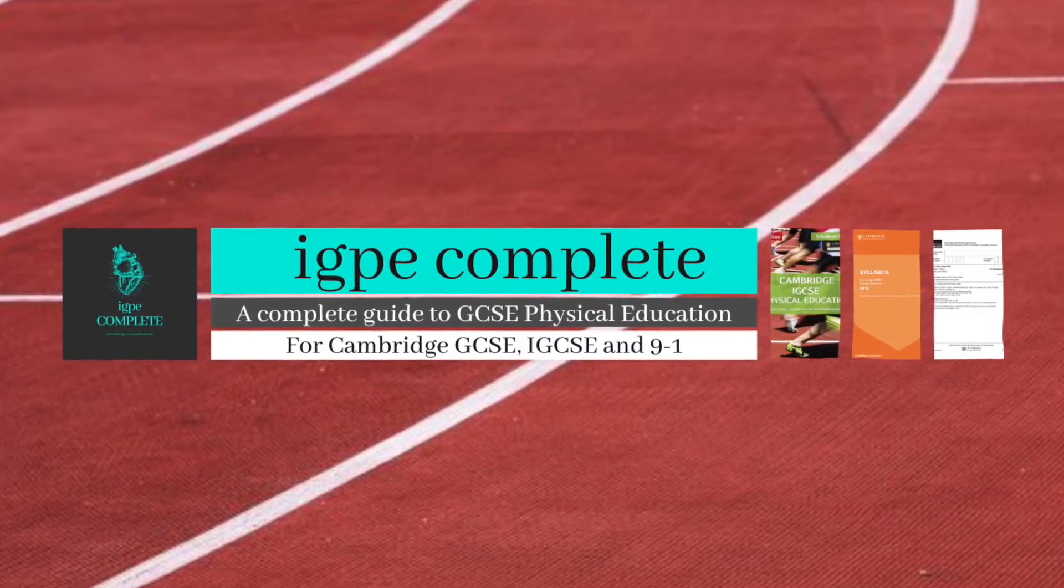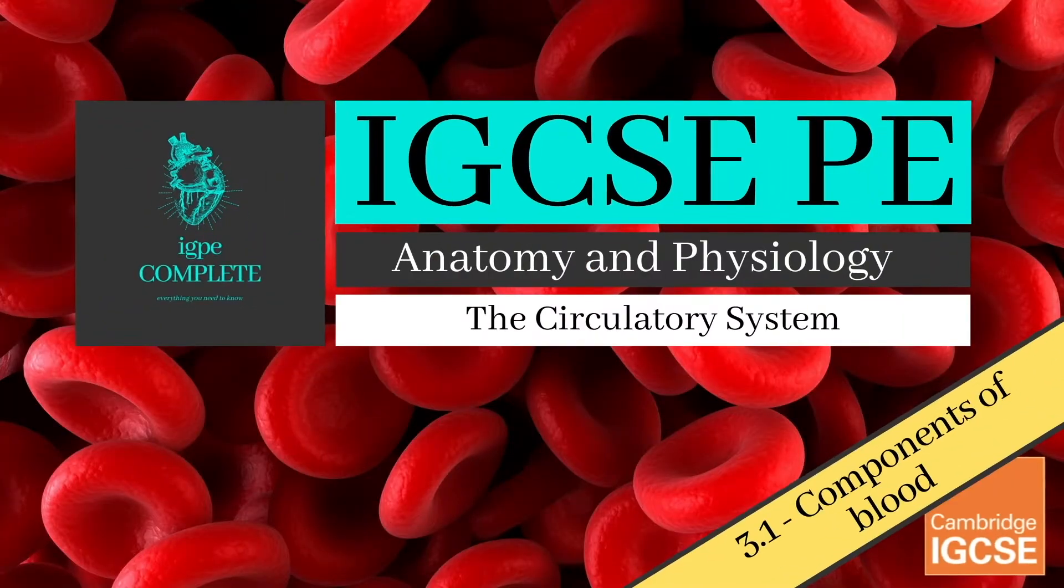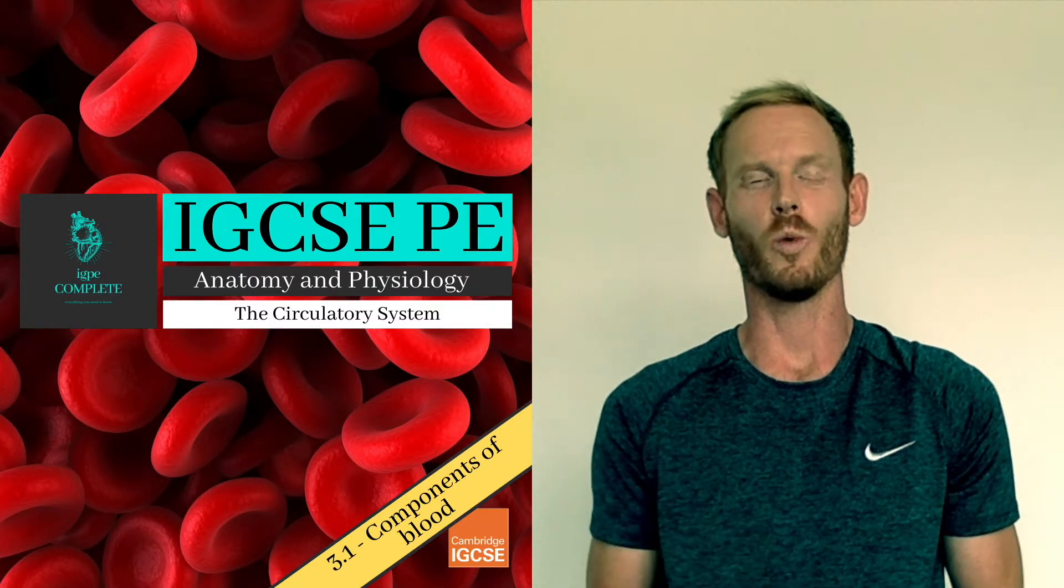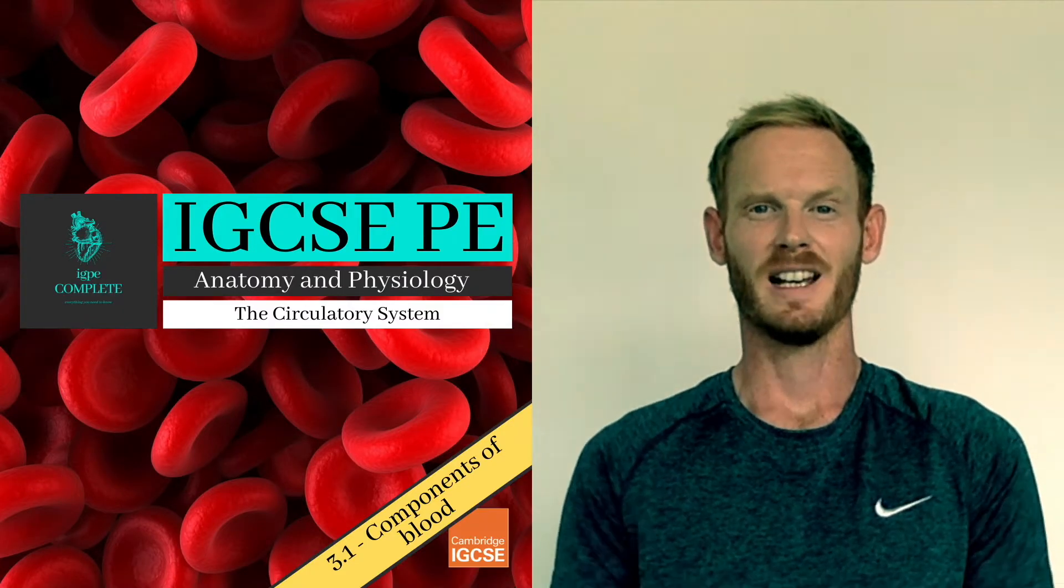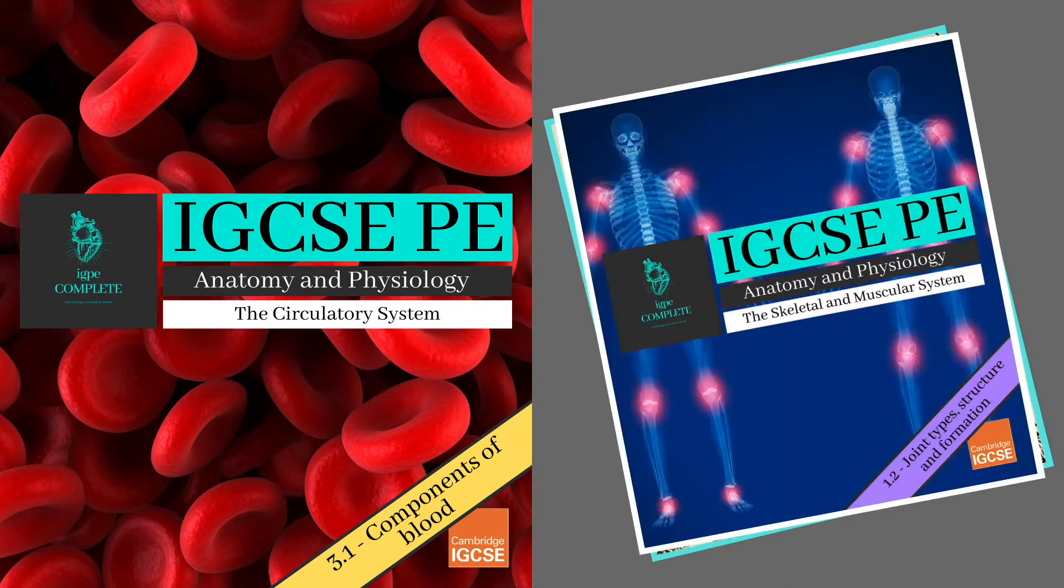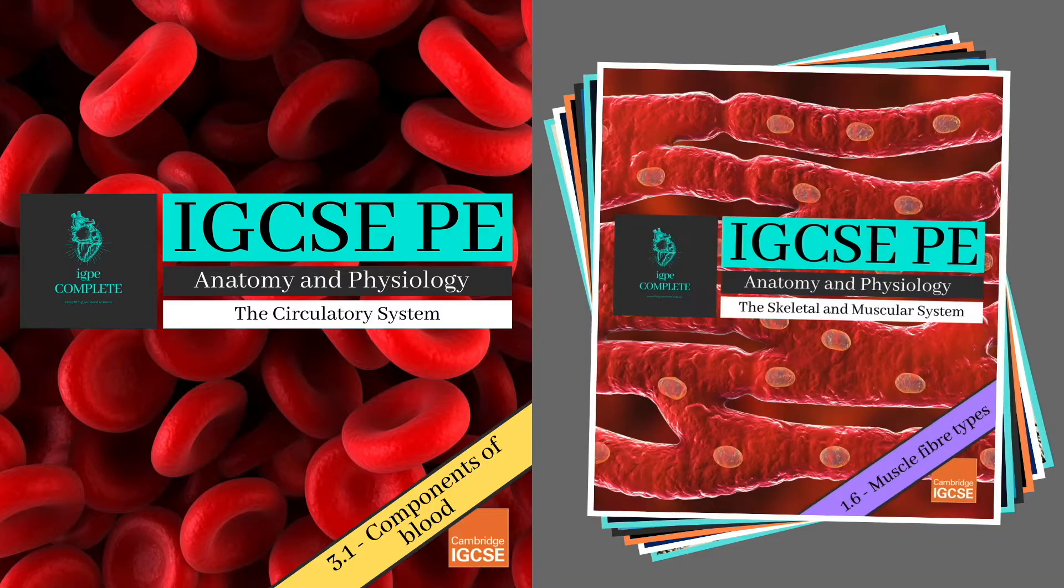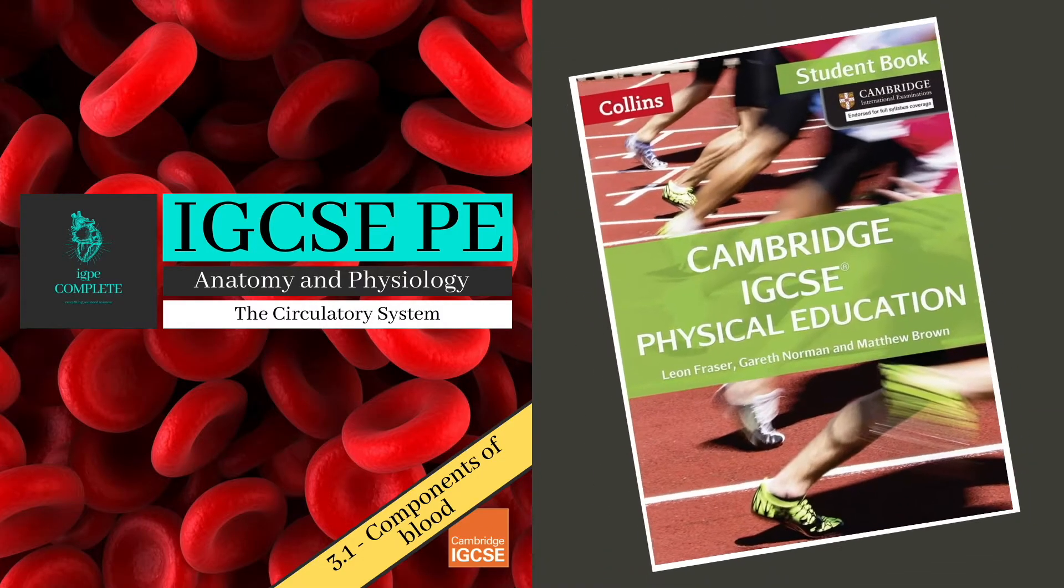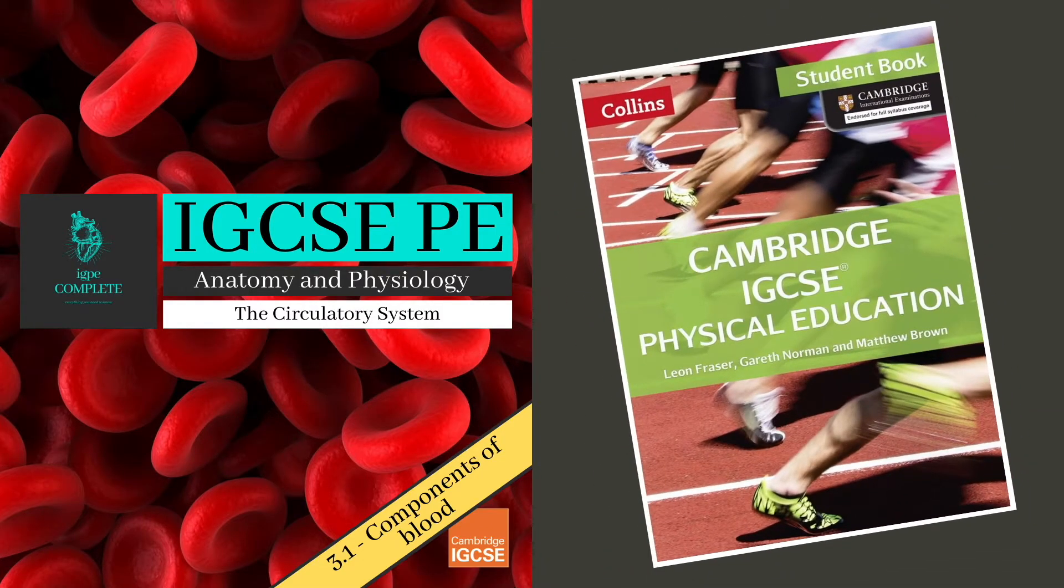Hello and welcome to another complete Cambridge IGCSE PE lesson. Today we'll move on to chapter three in the syllabus, the circulatory system, starting with part one, the components of blood. Clicking on the banner will take you to the anatomy and physiology playlist where you can find complete lessons on every topic included in the syllabus, titled according to the contents page of your Cambridge textbook.